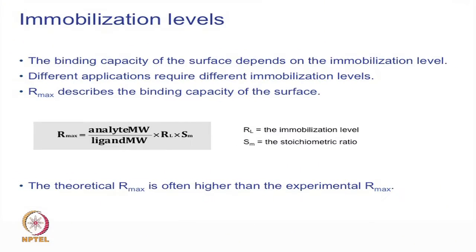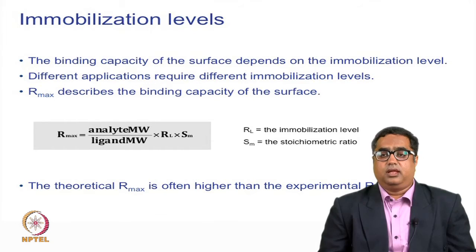Immobilization levels can be determined by two ways: a controlled immobilization process aimed at a specific level, or by calculating the target based on the R-max, stoichiometry, binding level, and number of binding sites the molecule has.